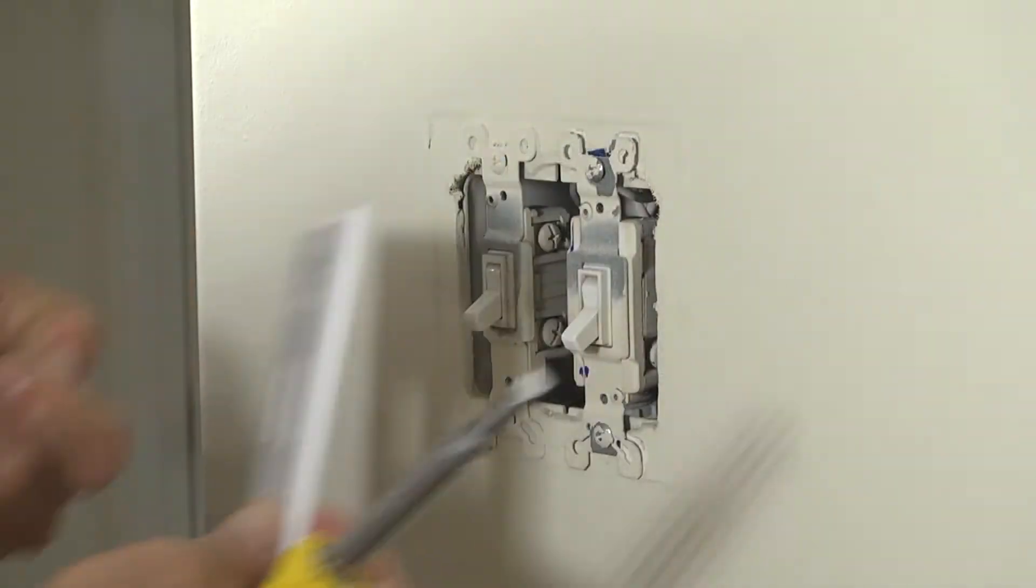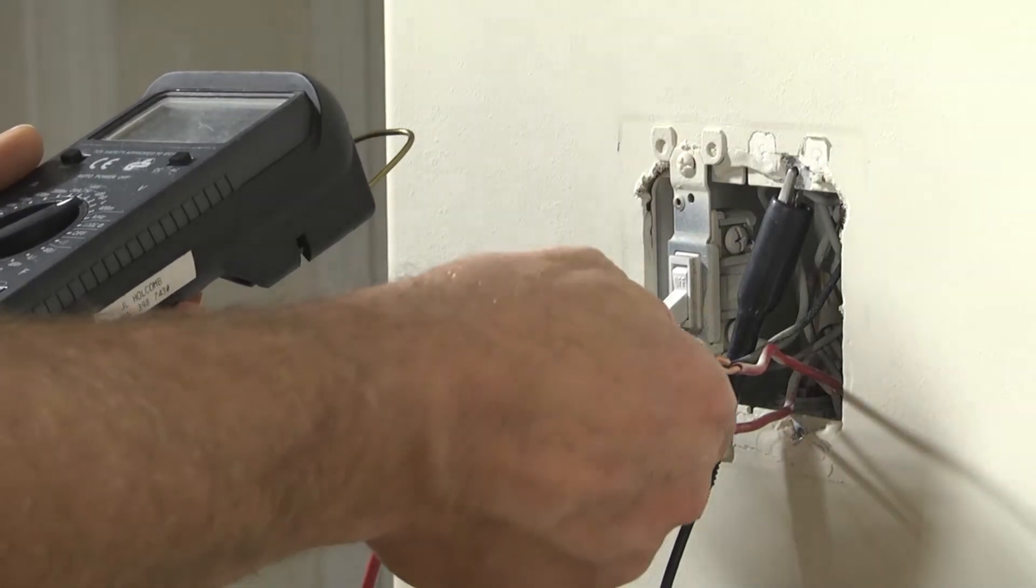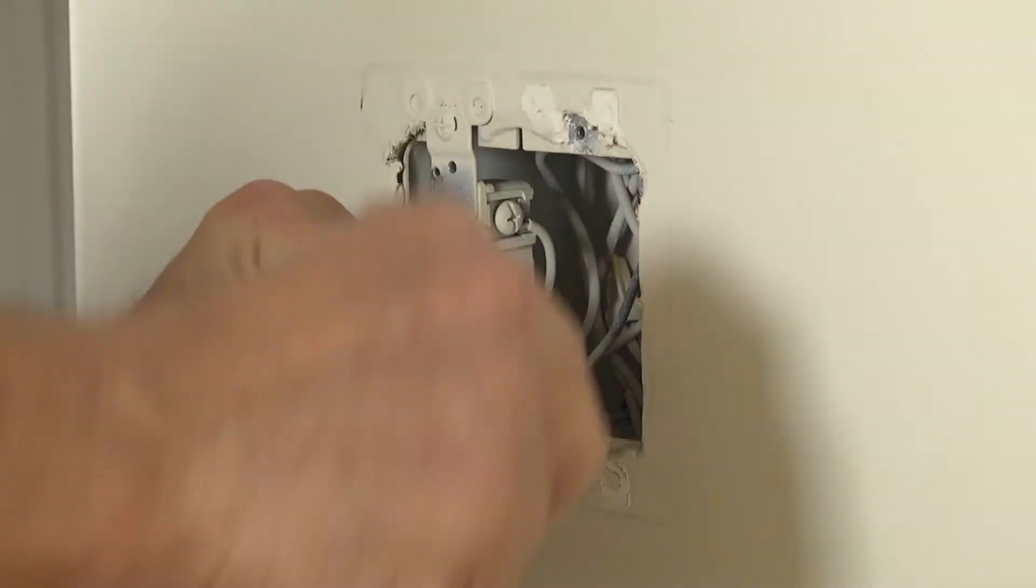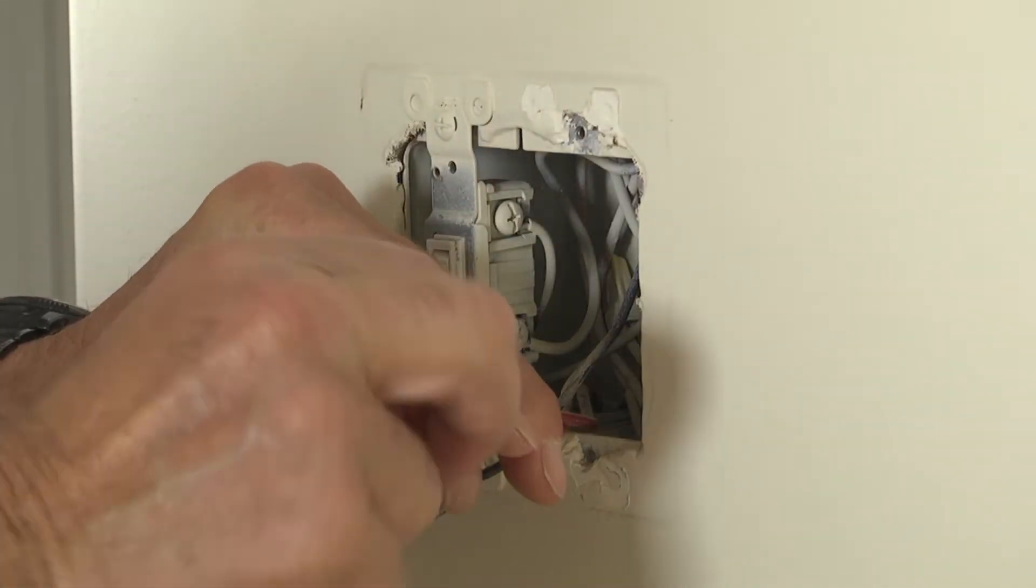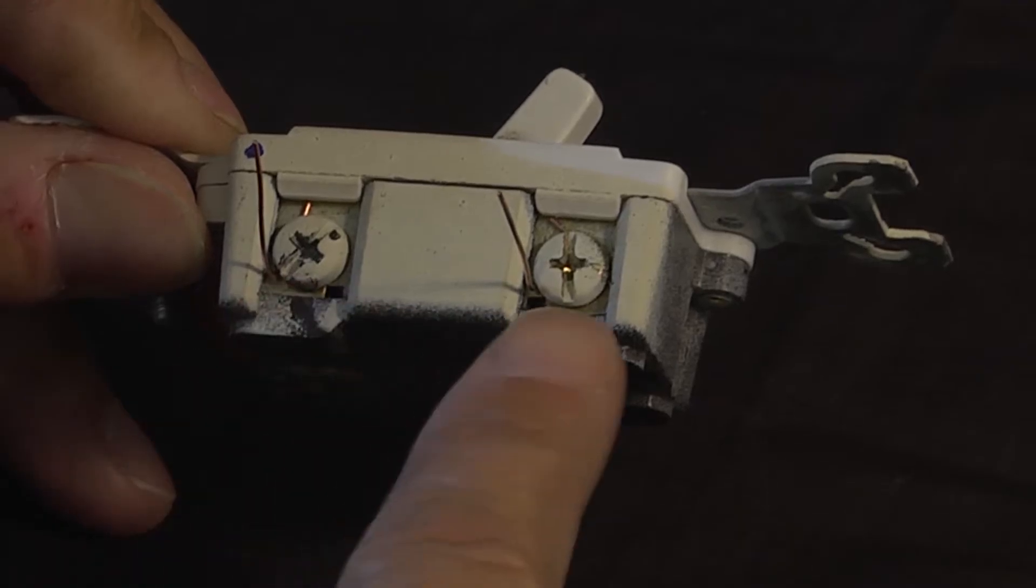In a previous video, we showed you how to find the hot and load wires in a three-way switch when the wire colors or the switch attachments are unreliable. But what about how to find the common screw of a three-way switch?